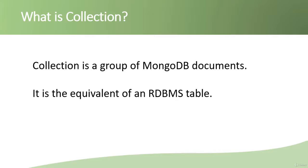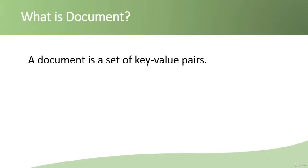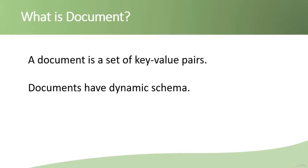A collection is equivalent to an RDBMS (relational database management system) table. Also, MongoDB is a non-relational database management system. A document is a set of key-value pairs. When we store data in MongoDB it is pretty much like JSON, which also uses key-value pairs.